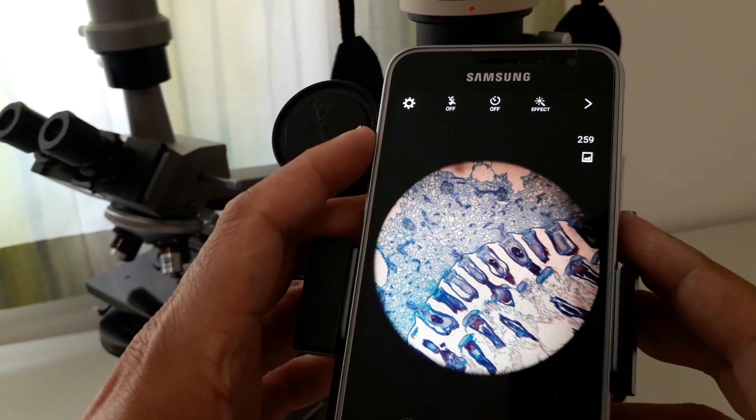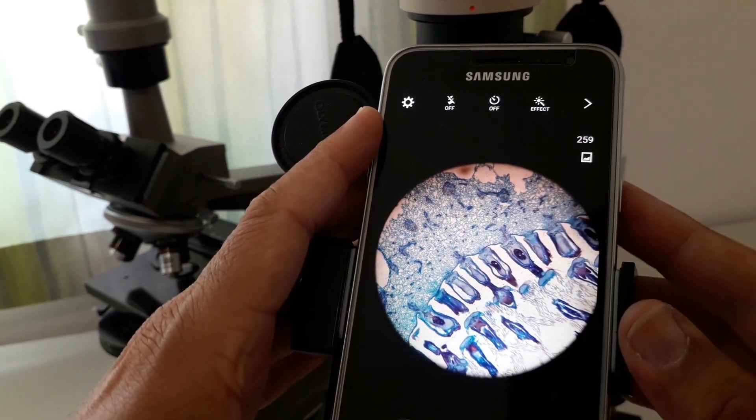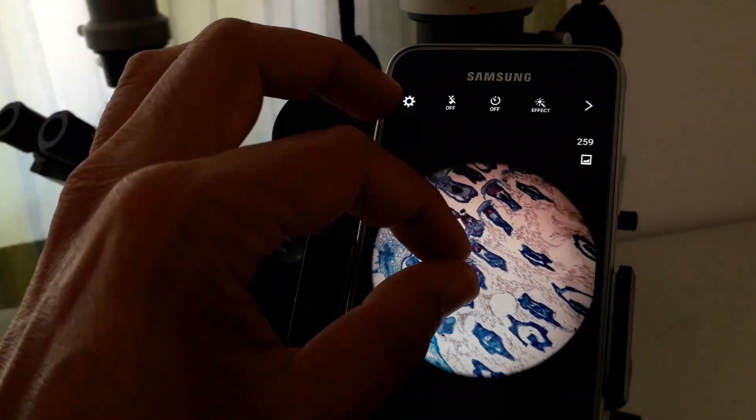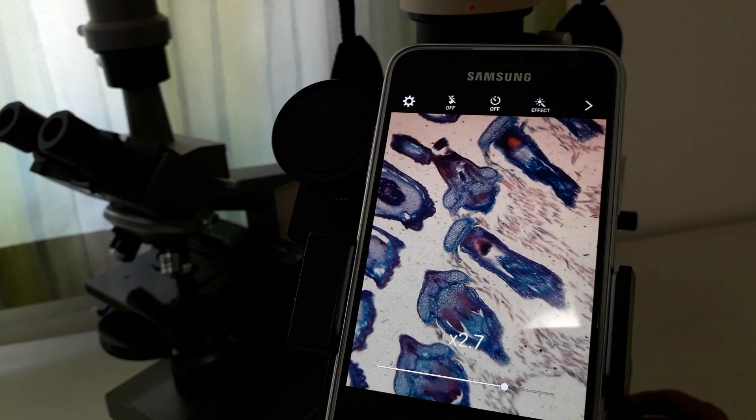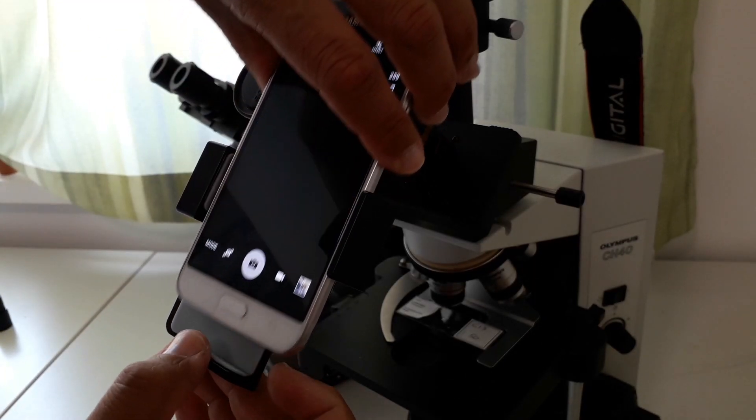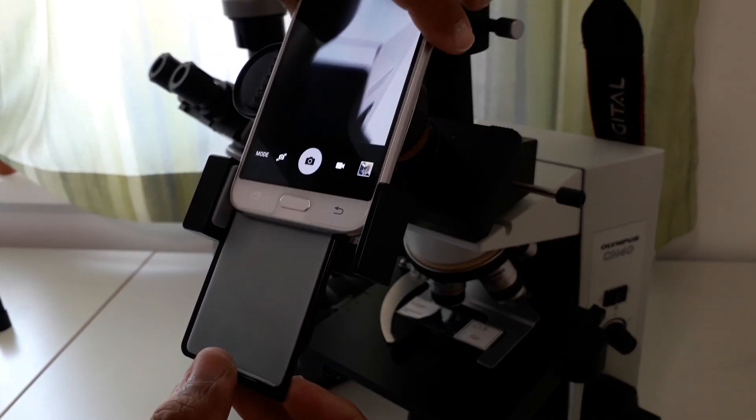It's also possible to do a digital zoom by simply pinching a little bit. In this way I get a full screen view. I can slide out the mobile phone and I can slide it back in again.